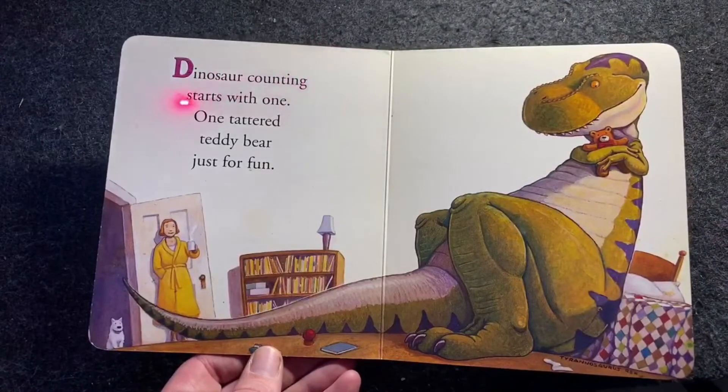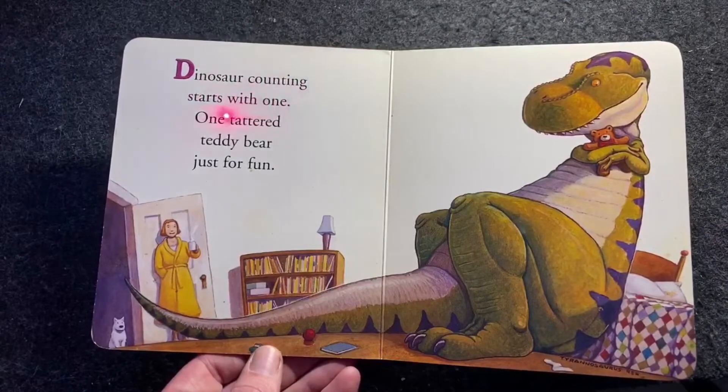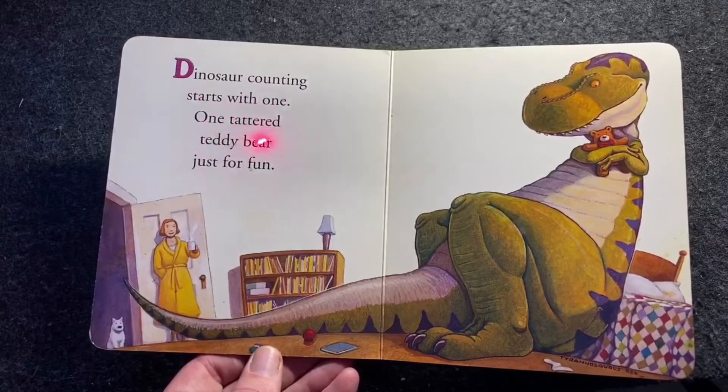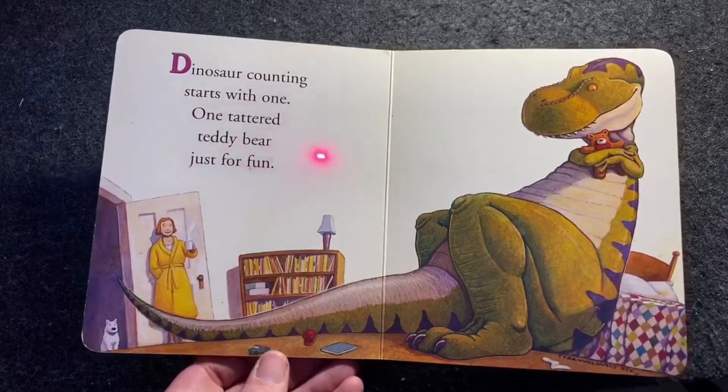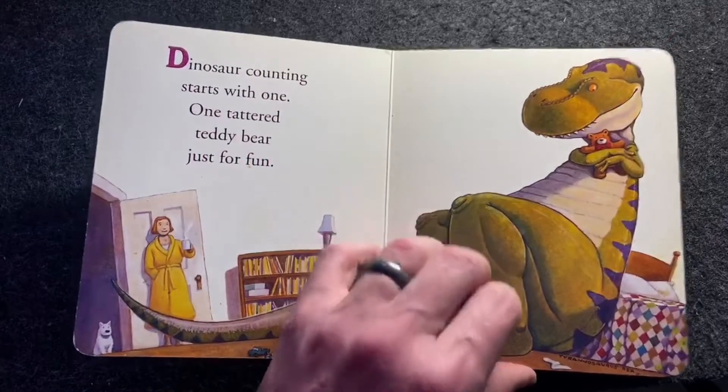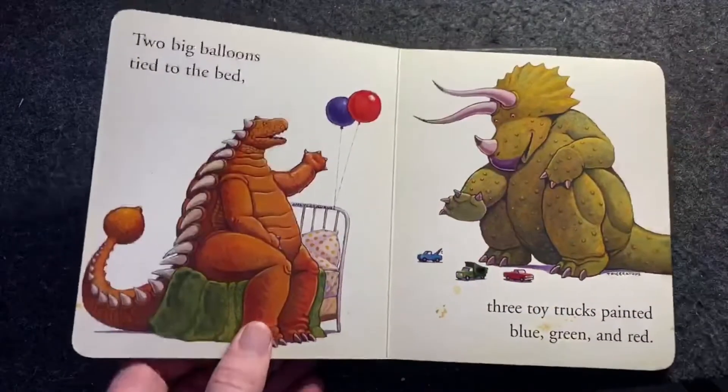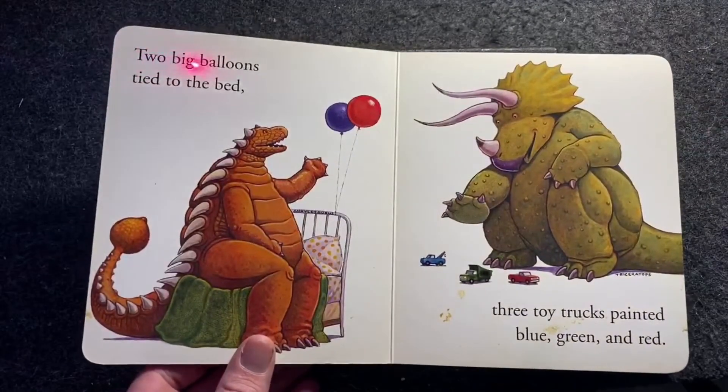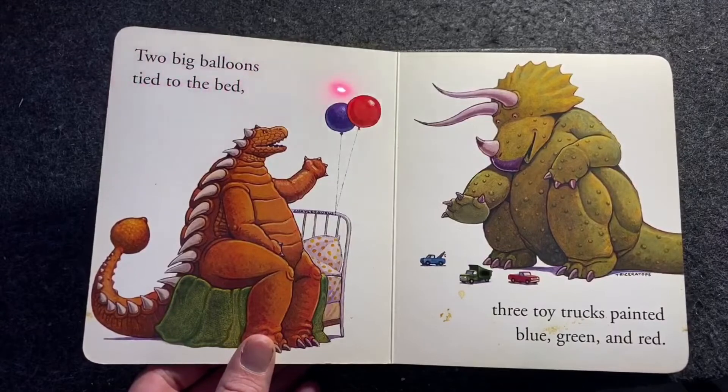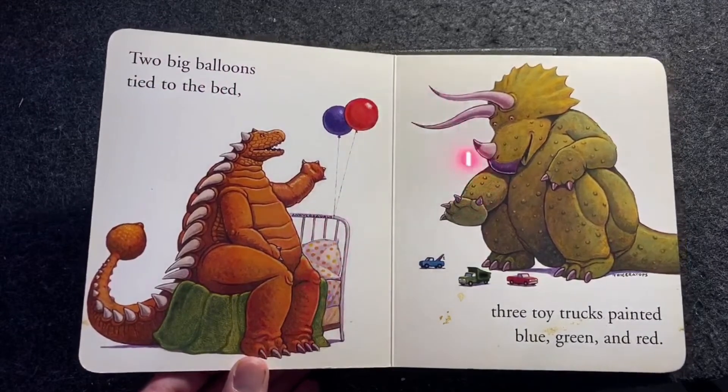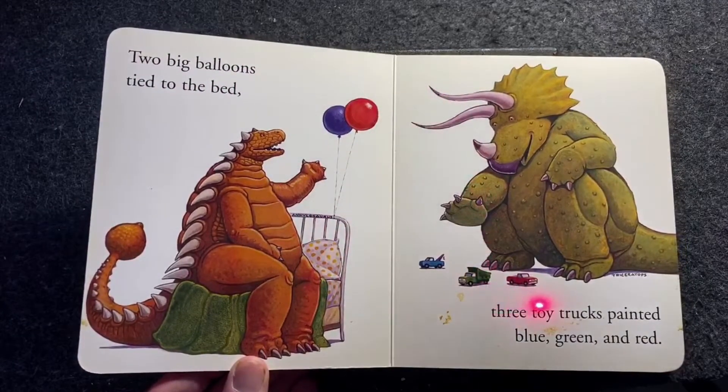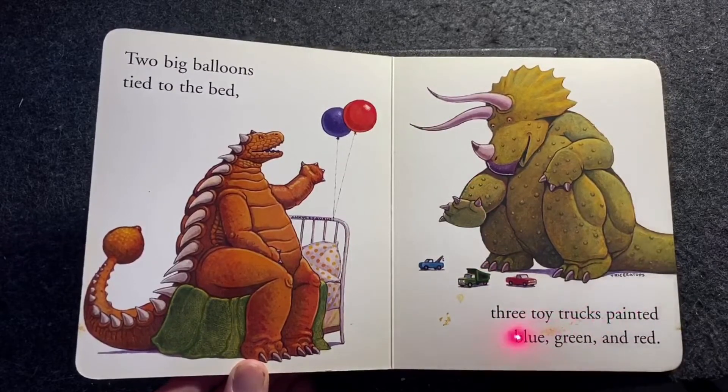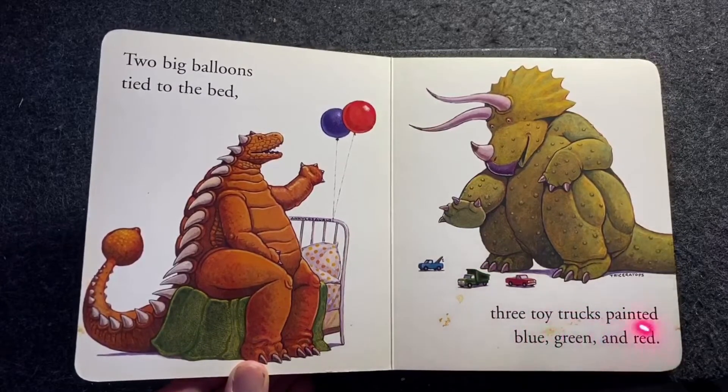Dinosaur counting starts with one. One tattered teddy bear just for fun. Two big balloons tied to the bed.